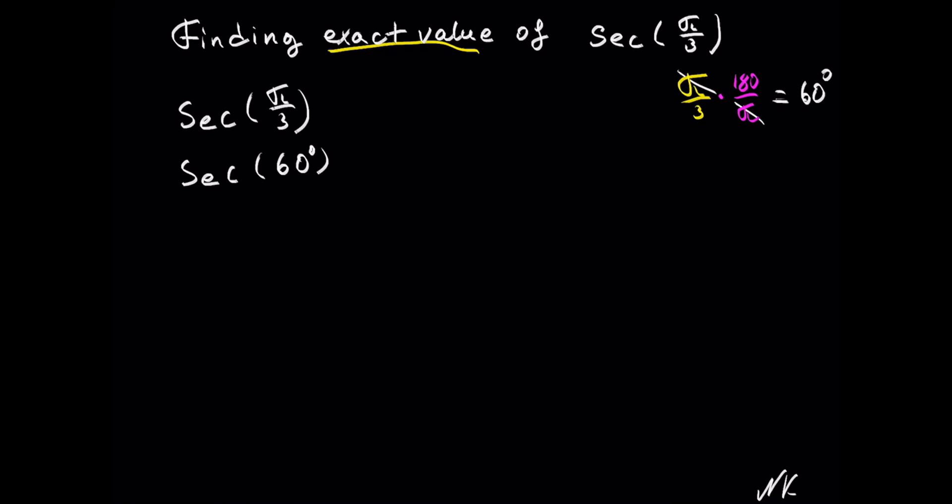You can either derive a 30-60 reference triangle, but I prefer to use a reference table. So I need to just remember that secant of an angle is the reciprocal, or 1 divided by cosine of that angle.